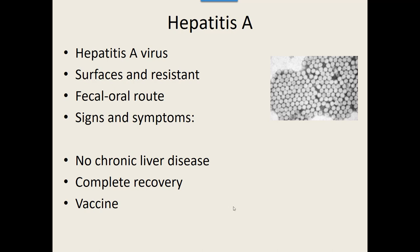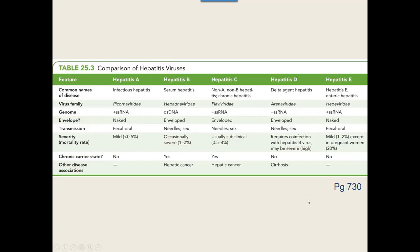There are five viruses altogether that can cause hepatitis. Hepatitis A is one of them. In our DNA viruses we went over hepatitis B, and this is our first RNA virus that can cause hepatitis — it has positive-sense, single-stranded RNA as its genetic material.